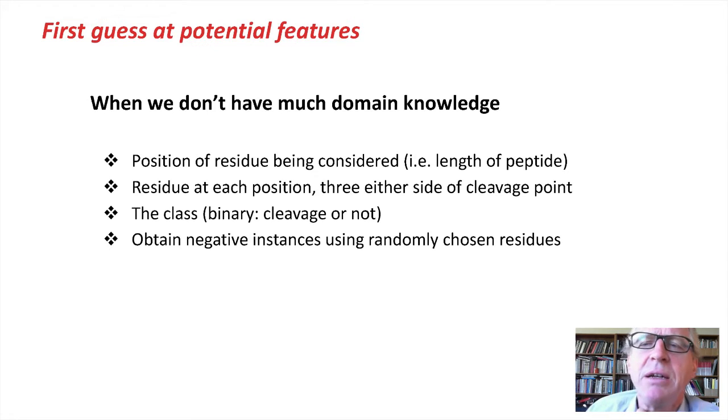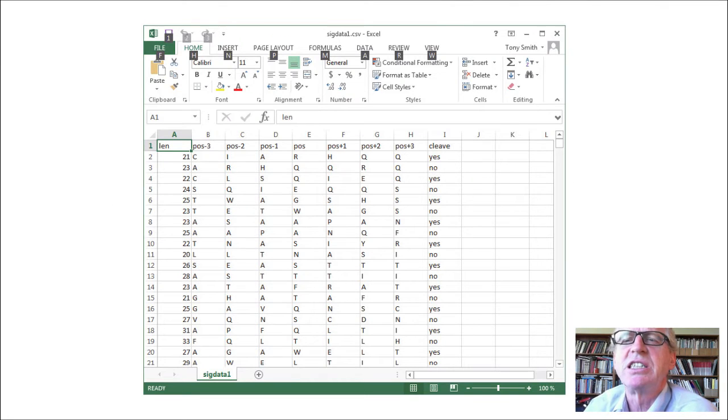So when we don't have much domain knowledge, we might come up with a set of features that include the position of the residue being considered, the residues at each position, three either side of the cleavage point. And then for each residue that we know is the cleavage site, we'll put that in the class of yes, this is the cleavage point. And we'll just get some negative instances by randomly choosing some other residues and producing the same information. And we might do this inside a spreadsheet.